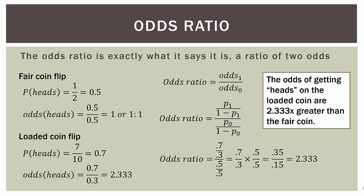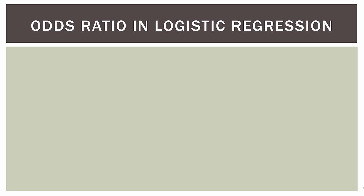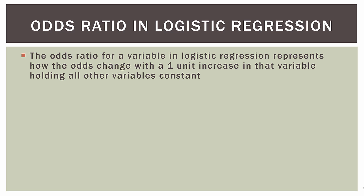Speaking of the odds ratio, let's talk about its role in logistic regression using a brief, simple example not related to our overarching home mortgage problem. In logistic regression, the odds ratio for an independent variable represents how the odds change with a one-unit increase in that variable, holding all other variables constant. If you're new to logistic regression, that may not make a lot of sense right now, but hopefully in the next minute or two it will.